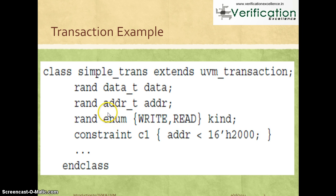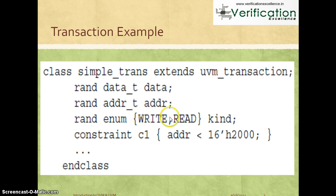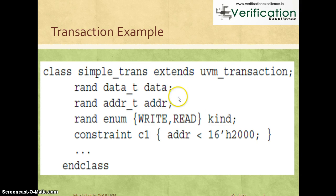Then you define all the information needed for the simple transaction. You have a data member of type data_t, which could be defined as bit [31:0] or logic [31:0]. You also need the address information, which is another random variable of type address_t. Then you have another variable which is an enum that can take two possible values: write or read. You can also create constraints — SystemVerilog constructs — to limit values, for example constraining the address to always be less than some threshold.